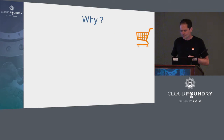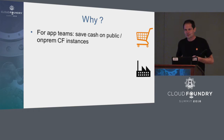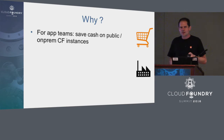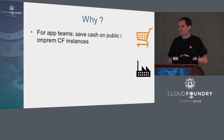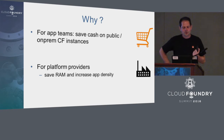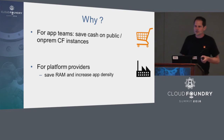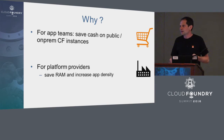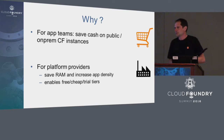We'll go through service consumers and service providers. For service consumers, Autosleep can be deployed both on-prem, on private, and public. Those application teams would get their applications automatically stopped, so the total app duration for their app would be smaller and they would have a smaller invoice at the end of the month — saving cash. For platform providers, you'd be able to handle the same workload for your application teams but with a smaller number of Diego cells, able to shut down some VMs and the associated hypervisors to save some RAM. Some service providers might be able to use this to provide free or cheap tiers because it's more affordable — you need less computing power to run applications.